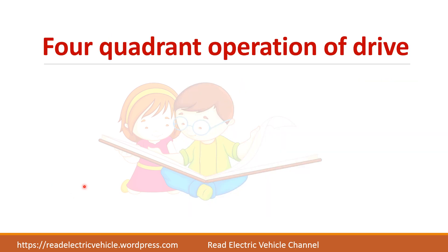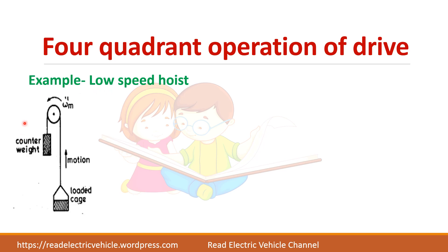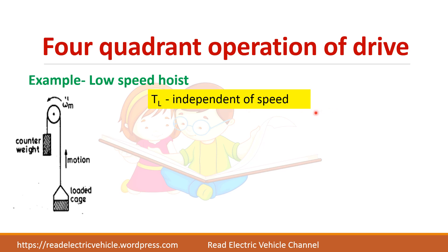Let us see the four quadrant operation of the drive using a low speed hoist as an example. The hoist has a pulley with a rope, a cage on one side where materials can be placed and moved up or down, and a counterweight on the other side. For a low speed hoist, the load torque is independent of speed — the speed-torque characteristic is a straight line, meaning load torque remains constant regardless of speed.